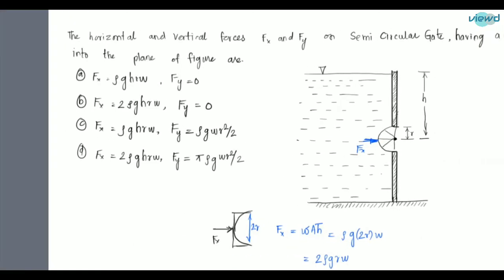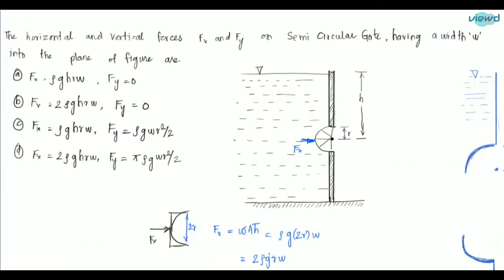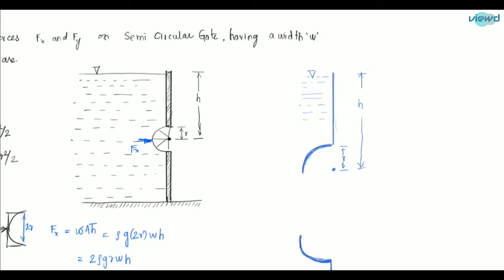So FX = 2ρgRWH. Looking at the options, H̄ is H in this case. Both option D and option B have the same FX expression. Now in order to find FY, we consider the vertical force components.